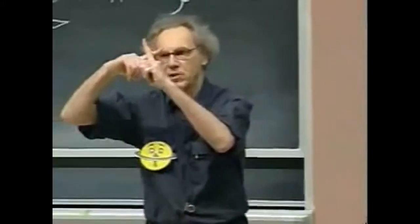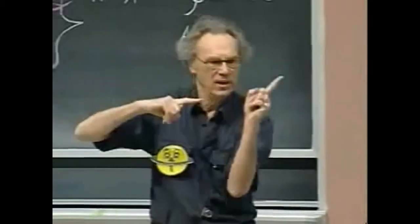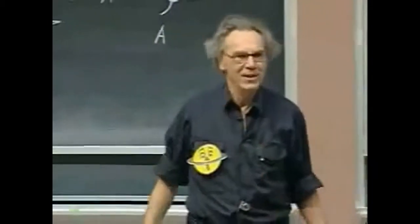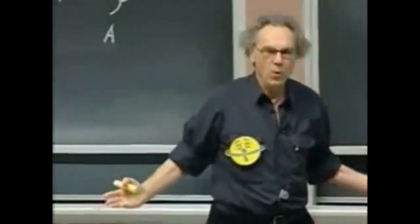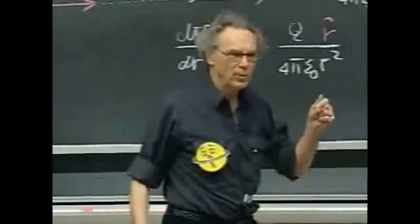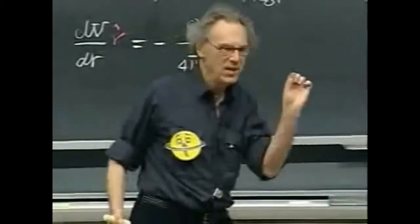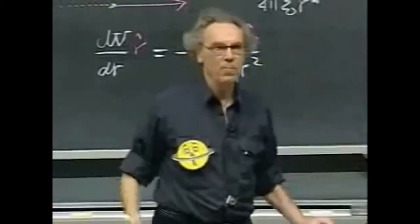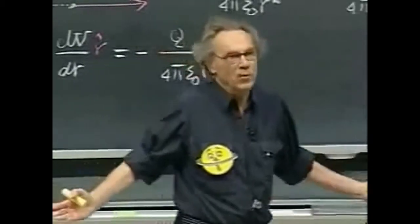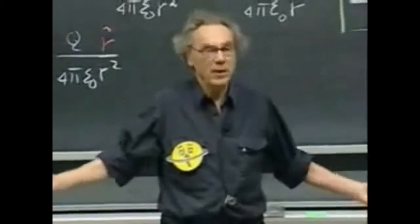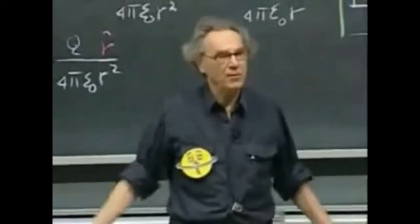These are the field lines — you move like this. You never do any work because the dot product between dL and E is zero. And if you don't do any work, the potential remains the same. That's the definition.